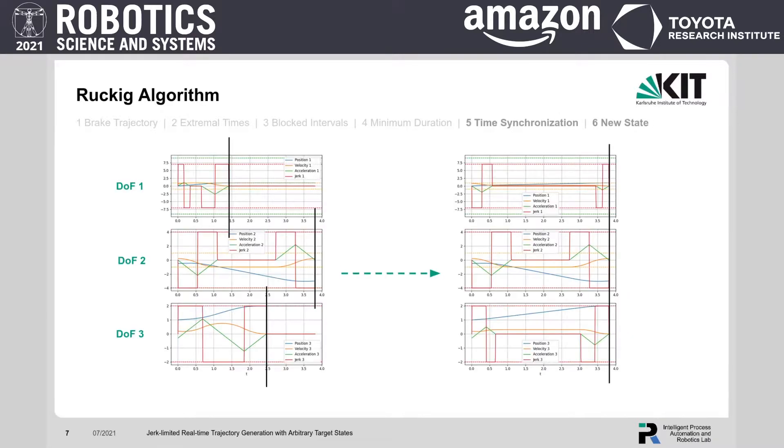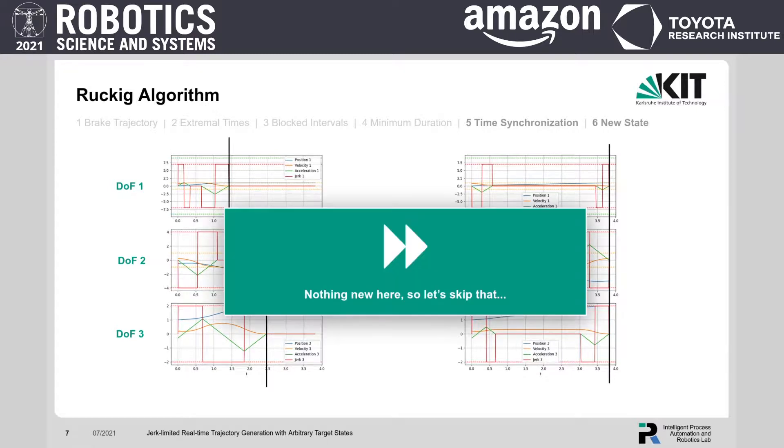Given this final duration, we calculate a possibly slower profile for each degree of freedom. Numeric calculation of these profiles can be quite complex, with polynomials of up to sixth degree needed to be solved in real time. Given that, we can calculate the state at a given time. But in general, these two steps are just as in related work, so let's skip that.